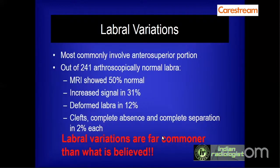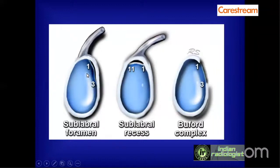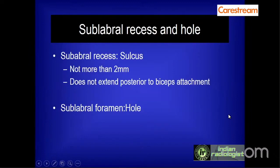Labral variations are far more common than believed, and in routine reporting one can encounter close to 50% of MRs showing these labral variations. Important pitfalls include the sub-labral foramen or sub-labral hole, a space below the anterior-superior labrum extending from 1 to 3 o'clock position; the sub-labral recess, a space below the superior labrum at the biceps anchor that usually does not extend posterior to the biceps anchor; and the Buford complex. The sub-labral recess usually does not measure more than 2 mm.